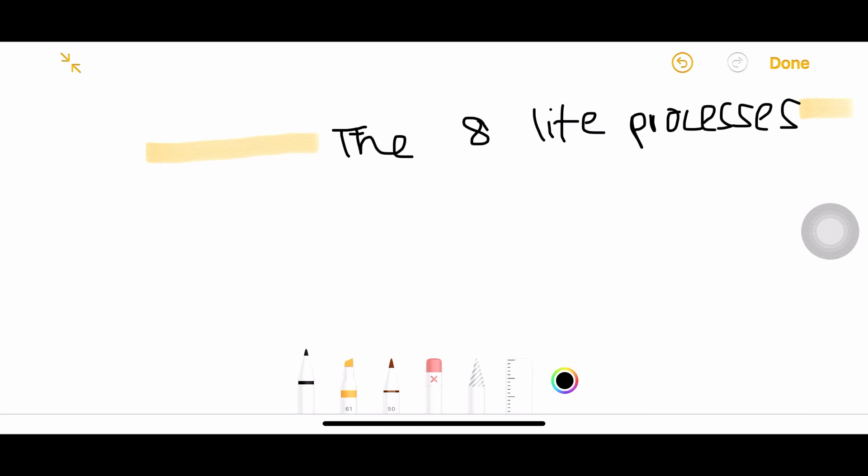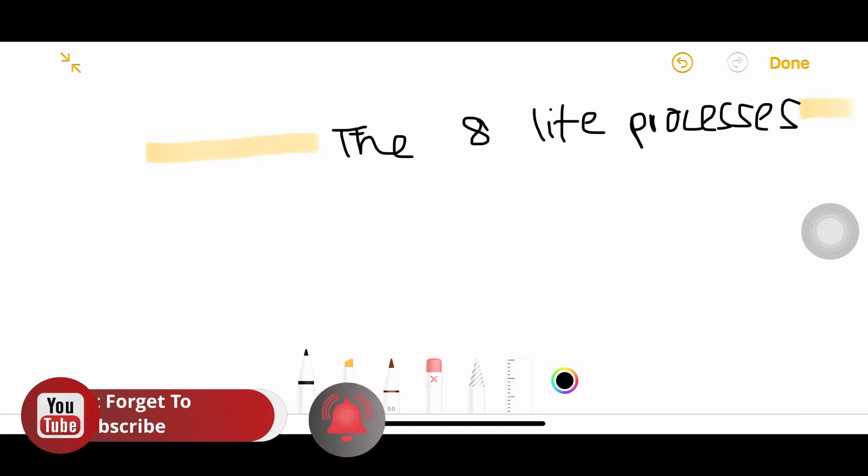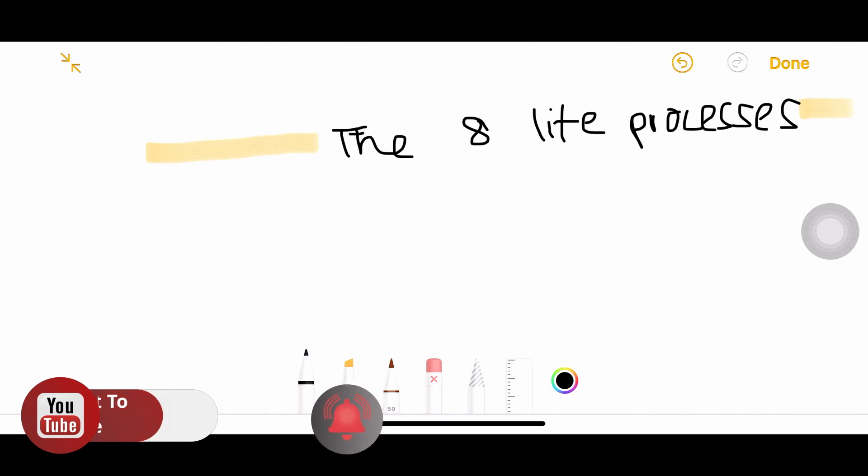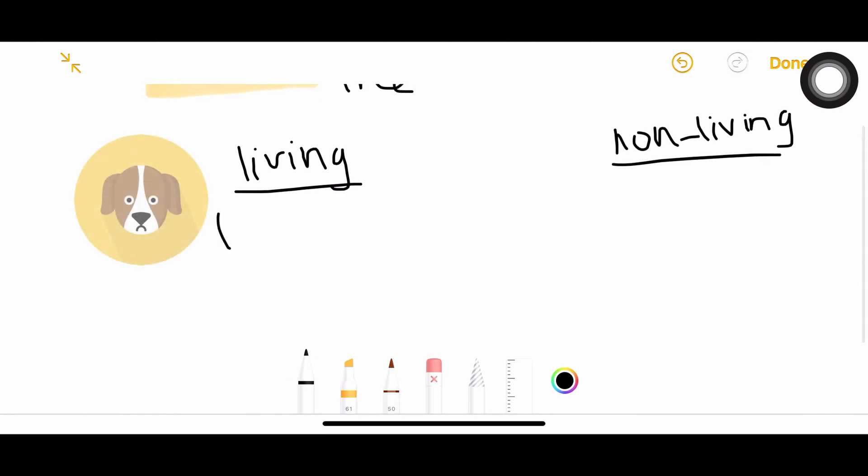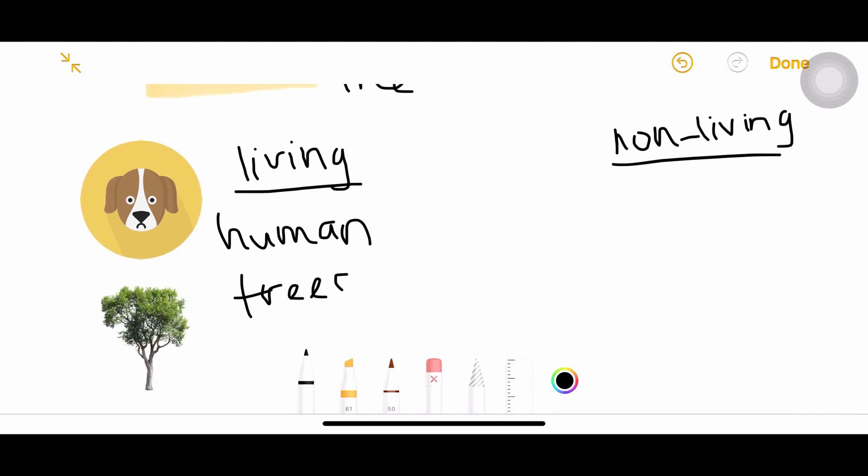When you were little in grades one through five, all your teachers used to ask you to categorize things based on if they are living or non-living. We'd categorize them based on some features they had, like living things can move while non-living things cannot move. I used to categorize living things such as humans, trees, and animals, and non-living things like chairs and tables - all the things that could not move or breathe.